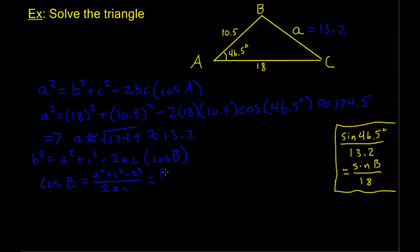Now in this case, my a is 13.2, so I have 13.2 squared plus c squared is 10.5 squared, minus b squared which is 18 squared, all over 2 times a which is 13.2, times c which is 10.5. And this gives us about 0.8165.